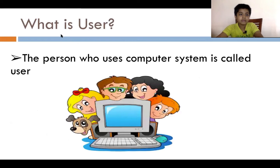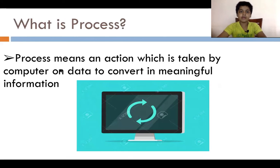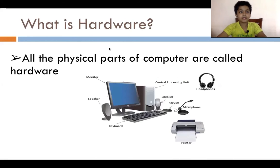So now the next topic is about what is user. It's simply the person who uses the computer system is called user. What is a process? Process means an action which is taken by computer on data to convert it into meaningful information. So now the next topic is the last one.